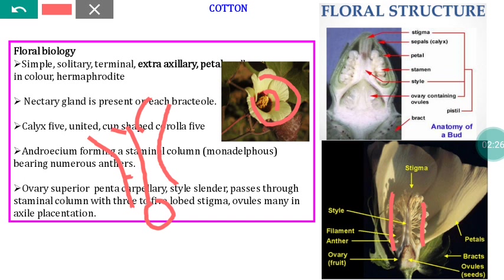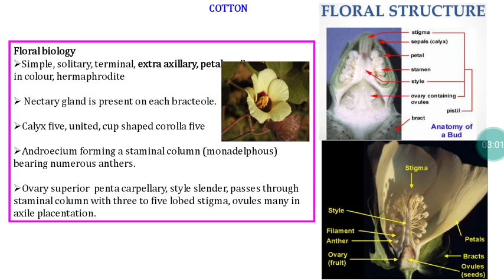There is an empty space between the staminal column and the style. The base of the staminal column is attached with the yellow color petal. This arrangement is very useful for emasculation — when you remove the petals, the staminal column also comes along with the petals automatically, making emasculation of the cotton flower an easy job. The ovary is of superior nature and penta-carpellary. The stamens are slender and pass through the staminal column, with three to five lobed stigmas.